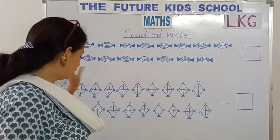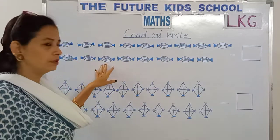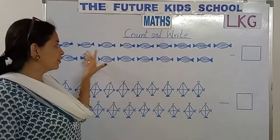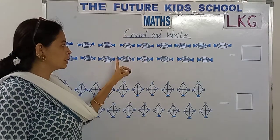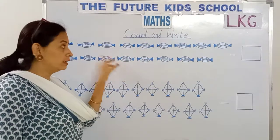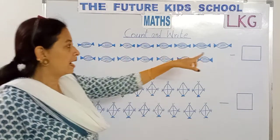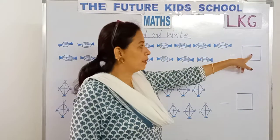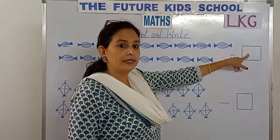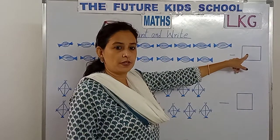Look children, look at the board. We've got chocolates over here. Let's count the number of chocolates and write the number in the box given.